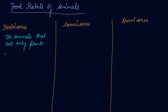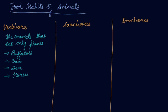Animals that eat only plants include buffalos, cows, deer, and horses. All these are herbivore animals.